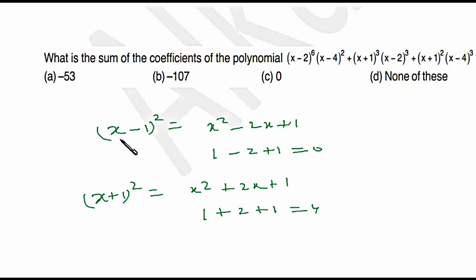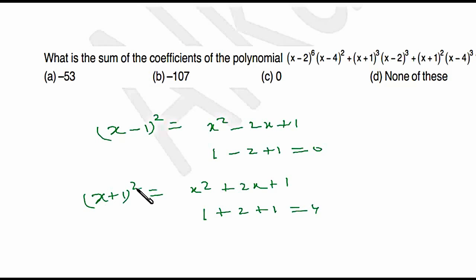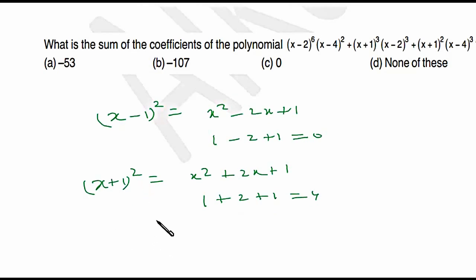If I put x = 1 in (x − 1)², I get (1 − 1)² = 0². Similarly, if I put x = 1 in (x + 1)², I get (1 + 1)² = 2² = 4, which gives me the sum of coefficients. You can extend the same rule further.